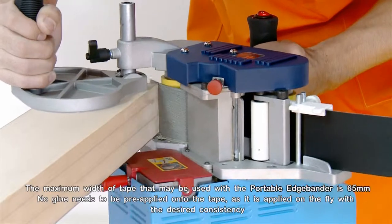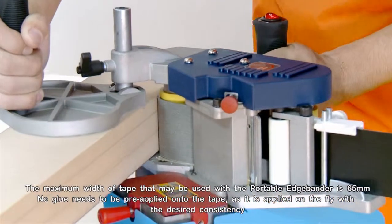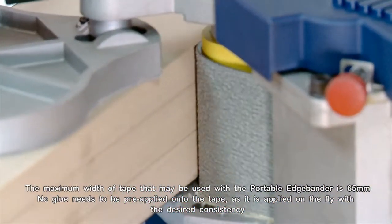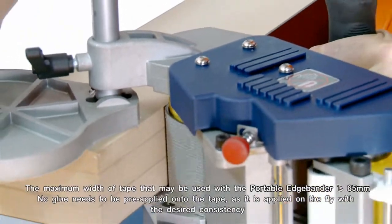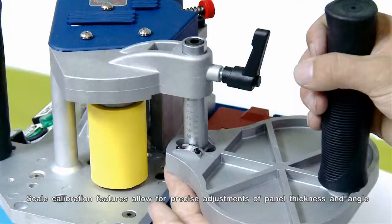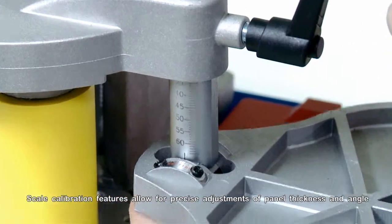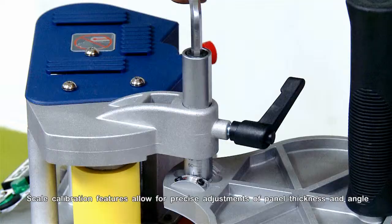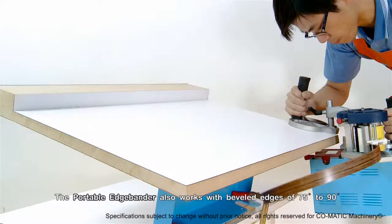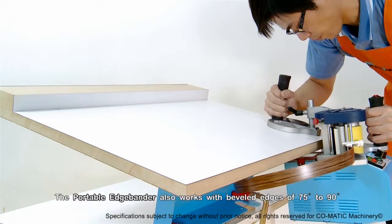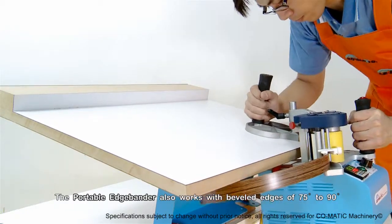The maximum width of tape that may be used with the Portable Edge Bander is 65mm. No glue needs to be pre-applied on the tape as it is applied on the fly with the desired consistency. Scale calibration features allow for precise adjustment of panel thickness and angle. The Portable Edge Bander also works with beveled edges of 75 degrees to 90 degrees.